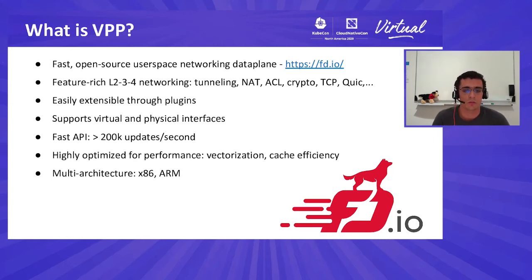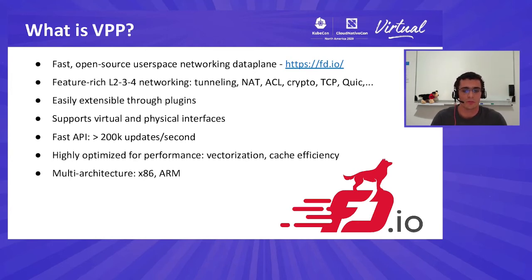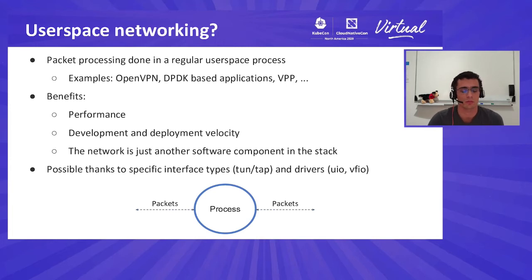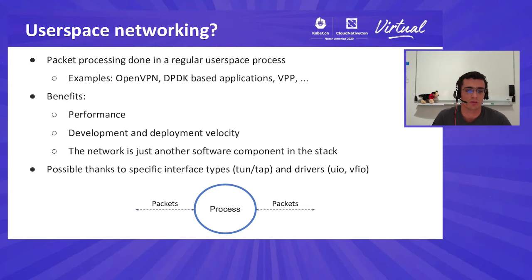If there is one thing you must remember about VPP, it is that it's really highly optimized. It uses vector instructions in order to process multiple packets in a single instruction, and it uses prefetch heavily to improve data cache efficiency. The packet processing is split into a graph of small elementary nodes that ensure the instruction cache is also very efficient. Userspace networking is simply a regular process that does packet processing — packets in, packets out. Examples include VPN clients like OpenVPN, DPDK-based applications, and of course VPP.